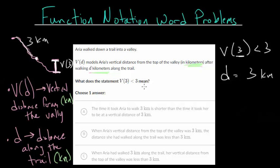So with that in mind, once you've gotten a feeling for what this statement means, then you can go to the questions. So the time it took Aria to walk 3 kilometers is shorter than the time it took her to be at a vertical distance of 3. Well, notice they're talking about the time, but nowhere in our problem did we represent the time with the letter. So that isn't going to be correct, since we're really just talking in distance, either vertical distance for our function or distance along the trail for our D value.